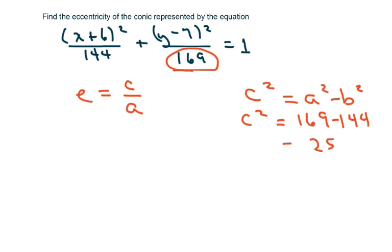We also know that the bigger number is your a squared. So c squared is 25, so c is plus or minus 5.